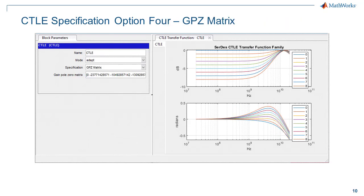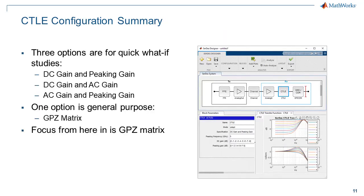The fourth option is the one I will be talking about from here on out: GPZ matrix. It is the most general, but typically requires some scripting to put the data into the correct format. In summary, there are three specifications good for quick what-if analysis — DC gain and peaking gain, DC gain and AC gain, and AC gain and peaking gain — and a fourth option, GPZ matrix. From here on out, the focus is on the GPZ matrix option for the specification of configurations.